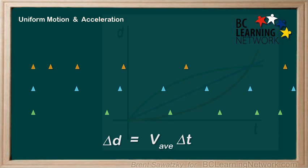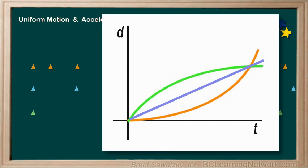If we were to graph these, it would look like this. Note that the blue truck is the only one with a straight line — that is, the velocity is not changing and the slope is always the same. Both other trucks are non-linear, meaning they have changing slopes. The slope of the orange truck is getting steeper and steeper — a positive acceleration. The slope of the green truck is getting smaller and smaller — that's negative acceleration, or deceleration.